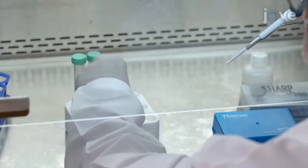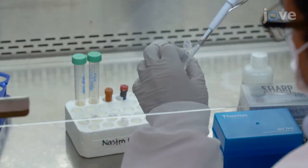Stain 2 times 10 to the fifth power of both uninfected and baculovirus infected SF9 cells with 0.5 milliliters of appropriate staining solution.